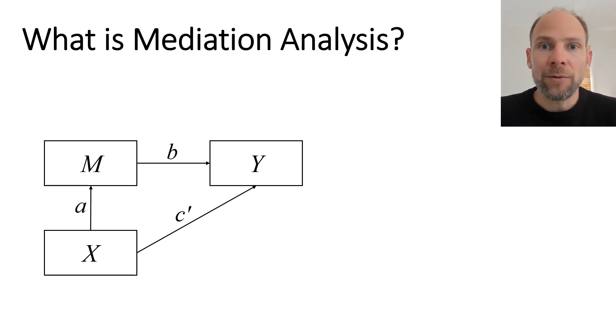When do we use statistical mediation analysis? What is it good for? It is used when we suspect that there might be indirect effects of one variable or multiple variables on one or more outcome variables that go via some other variables.